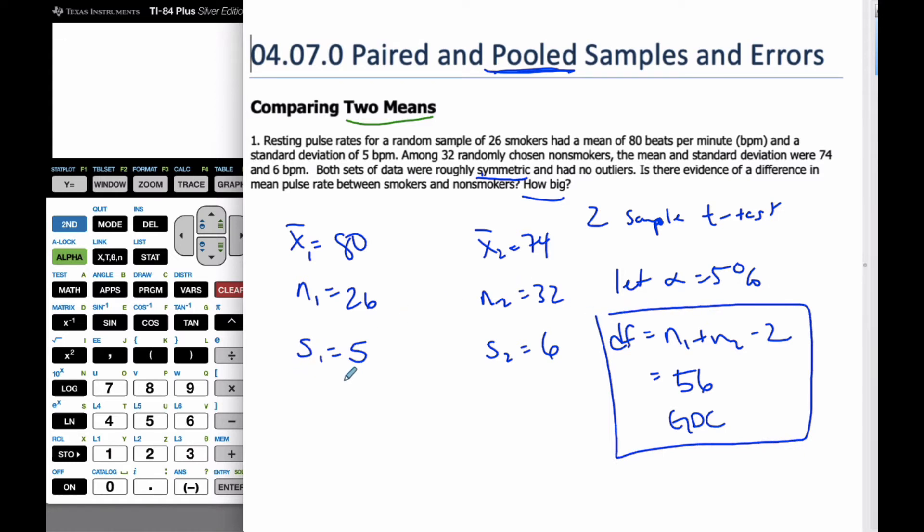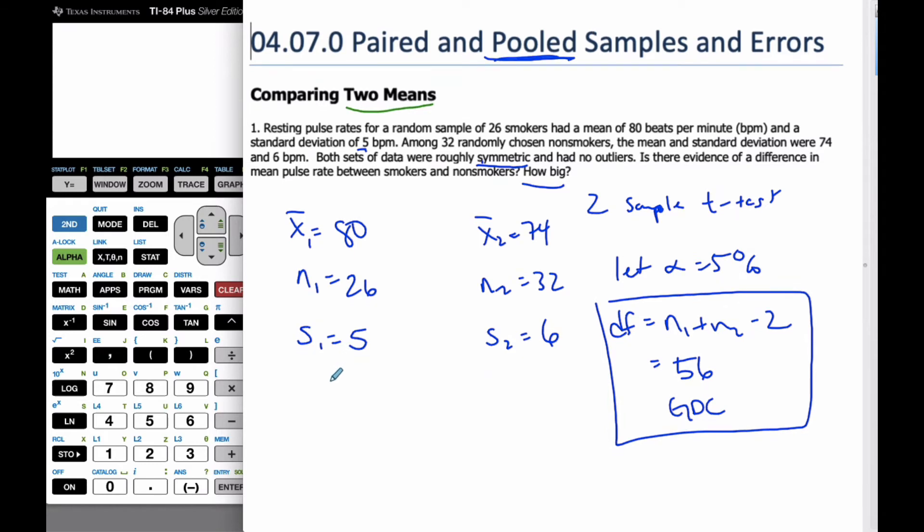Now we look at the standard deviation. We have to ask ourselves, is this the unbiased estimate of the populations, or is it the actual standard deviation of these particular groups of data? Because it's the actual standard deviation of these 26 smokers, it's the biased estimate of the population, so we have to go and calculate the unbiased estimate.